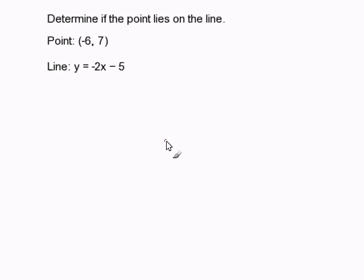Determining if a point lies on a line. To determine if this point lies within the line, all I have to do is substitute in the x and y values for the ordered pair (-6, 7) into this equation for a line.